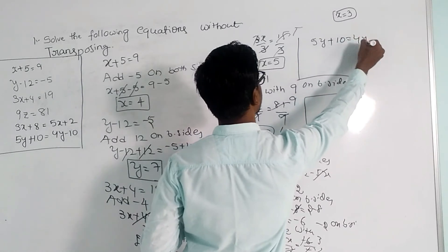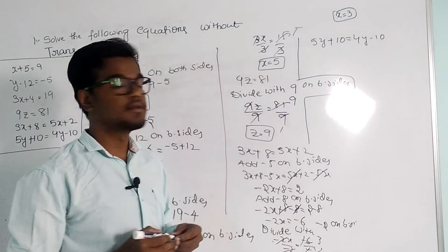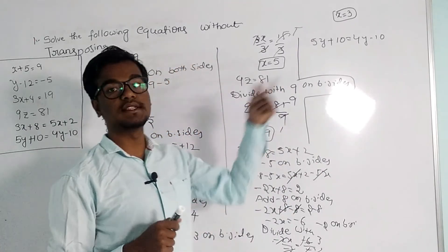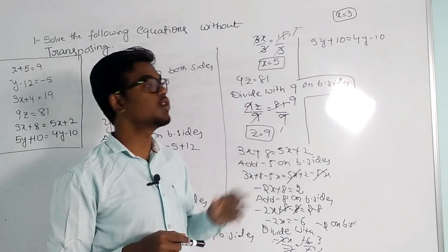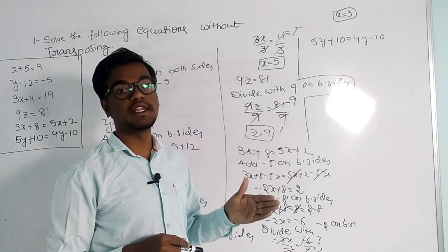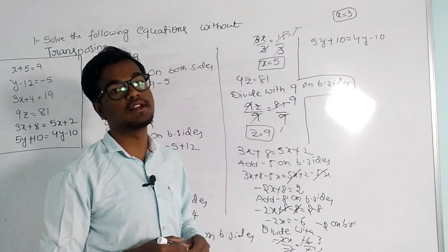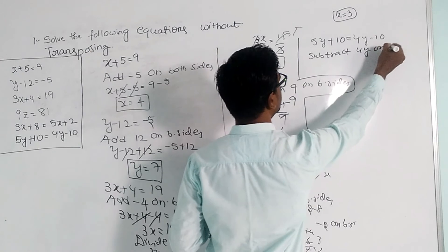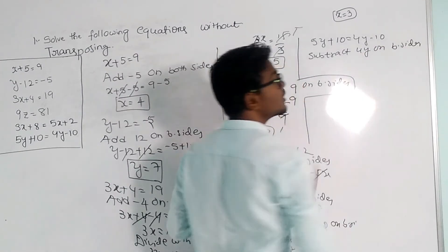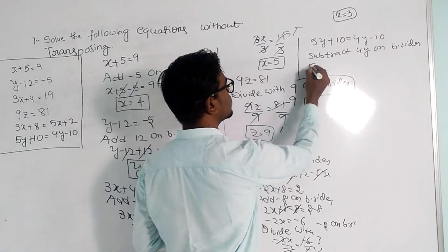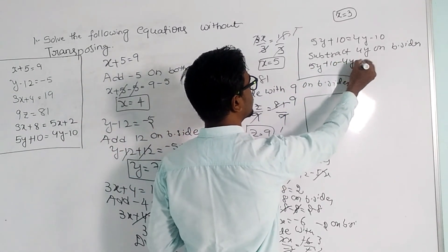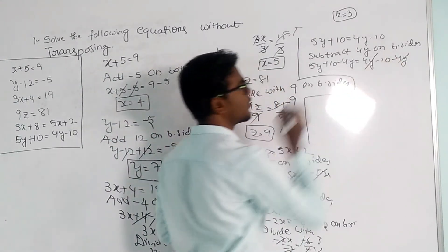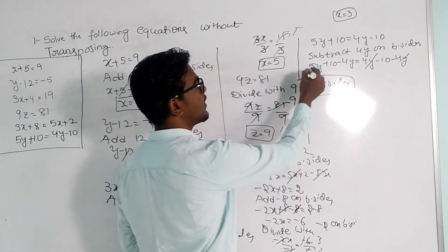The next equation is 5y plus 10 equals 4y minus 10. Here 5y is on the left side and 4y is on the right side. We can remove the variable from either side; it is better to remove from the right side. So we subtract 4y on both sides: 5y plus 10 minus 4y equals 4y minus 10 minus 4y. The 4y terms cancel, and 5y minus 4y becomes...